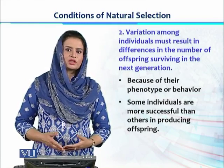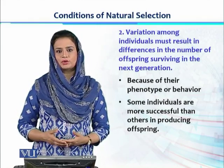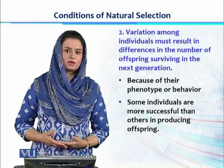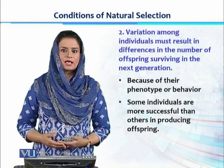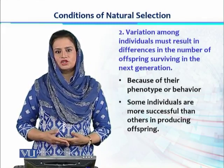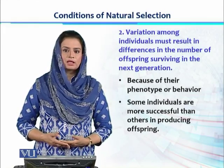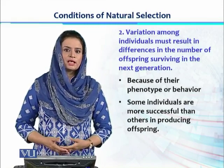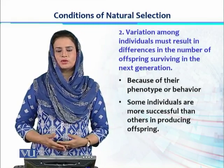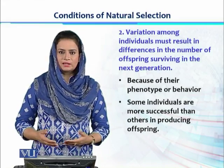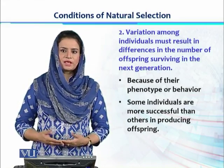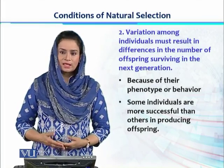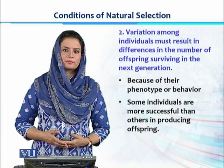The variation occurring in their reproductive potential is because of their phenotype, because of the behavior of different individuals, and because of the different genotypic capacity of these individuals due to variations. So there are some individuals who are more successful — they produce a large number of offspring, and this large number of offspring makes them more successful in surviving in that environment. That's how they are favored by natural selection.